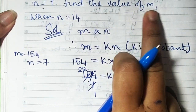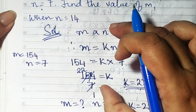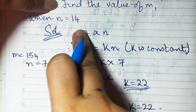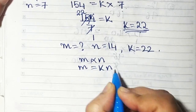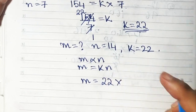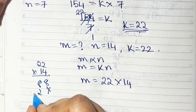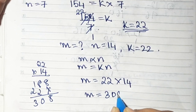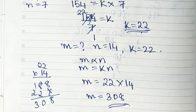Now find M when N equals 14 and K equals 22. Since M is directly proportional to N, M equals KN. Substituting: M equals 22 multiplied by 14. Calculating: 4 twos are 8, 1 two is 2, and so on — 22 times 14 equals 308. So the value of M is 308. First find the constant, then substitute the new values. The answer is 308.